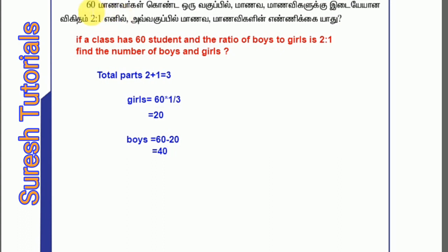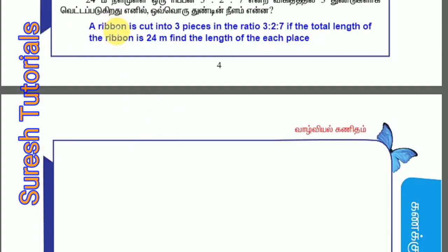So the girls is 20 and the boys — the boys is 20. What's the last question? A ribbon is cut into 3 pieces in the ratio of 3 is to 2 is to 7. If the total length of the ribbon is 24 metres, find the length of each piece.